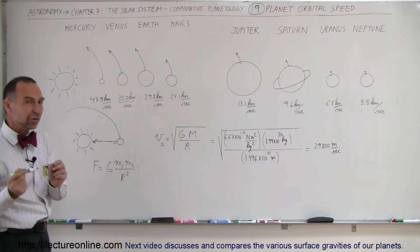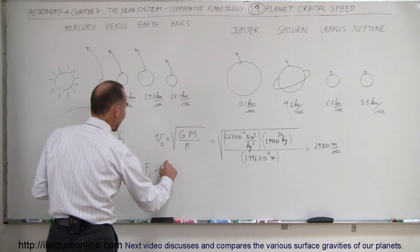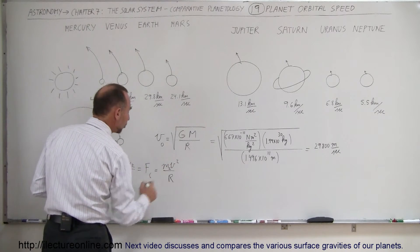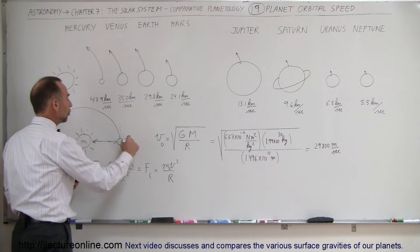Now, if we set that equal to the centripetal force, if we say this is equal to F sub C, which is equal to mv squared over R, and of course, that would be m sub 2, the mass of the planet. So, this would be m1, this would be m2.